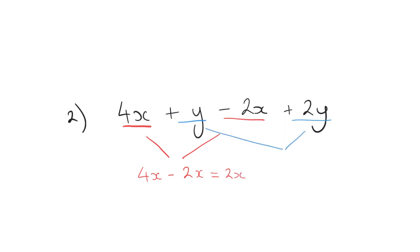And then similarly over here, we've got y plus 2y. There's a 1 there, imaginary 1. So that makes 3y. And that's a plus. These are both positive numbers.